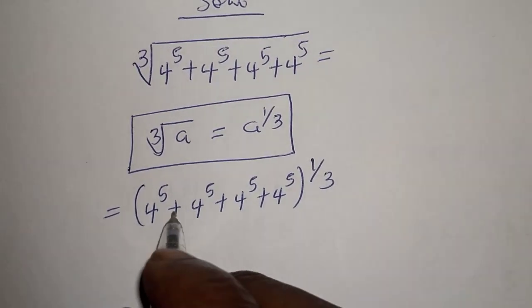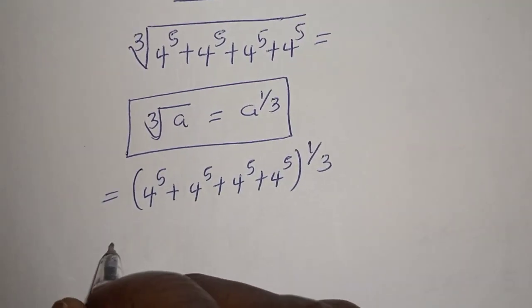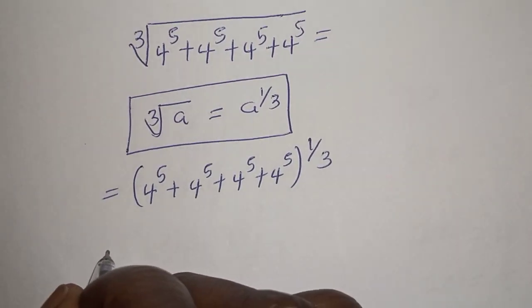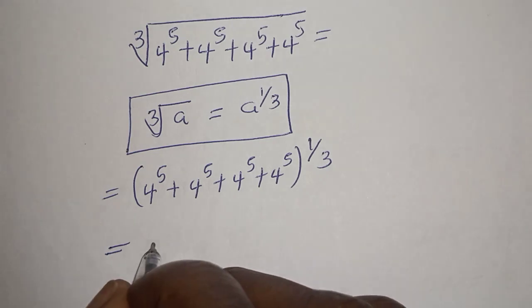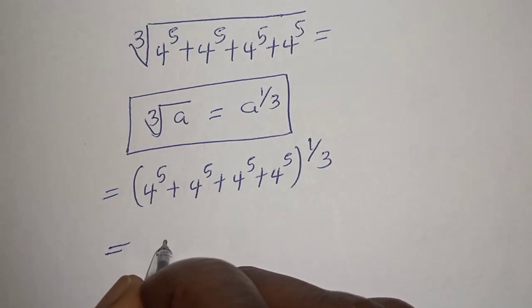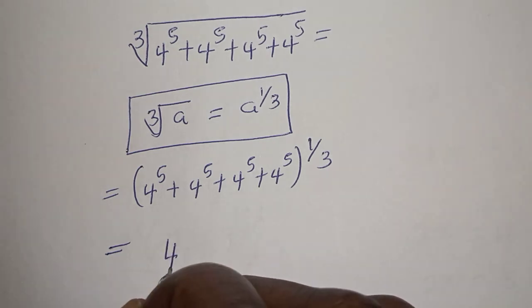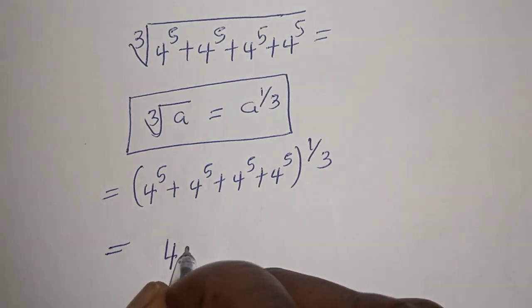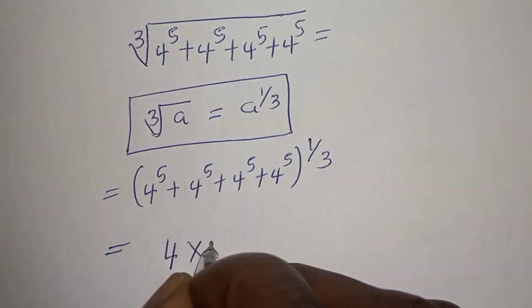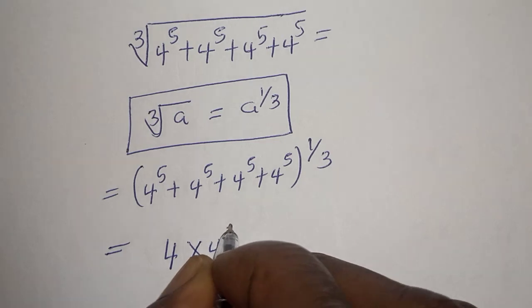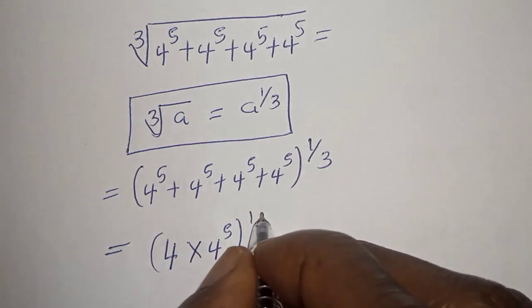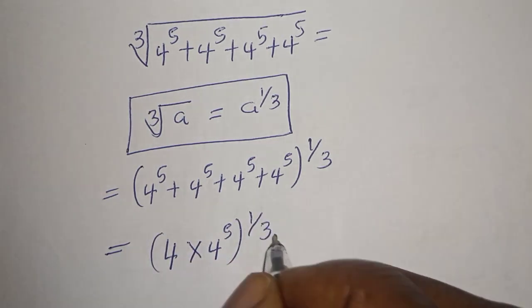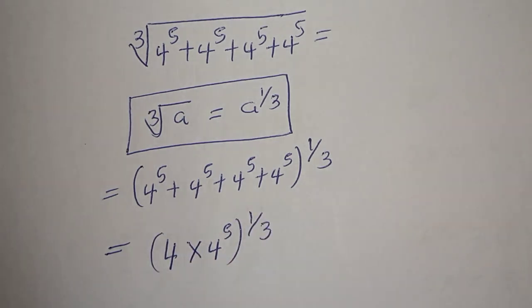Now 4 raised to power 5 is common — let's bring it out. This gives us 4 multiplied by 4 raised to power 5, all to the power of 1 over 3.